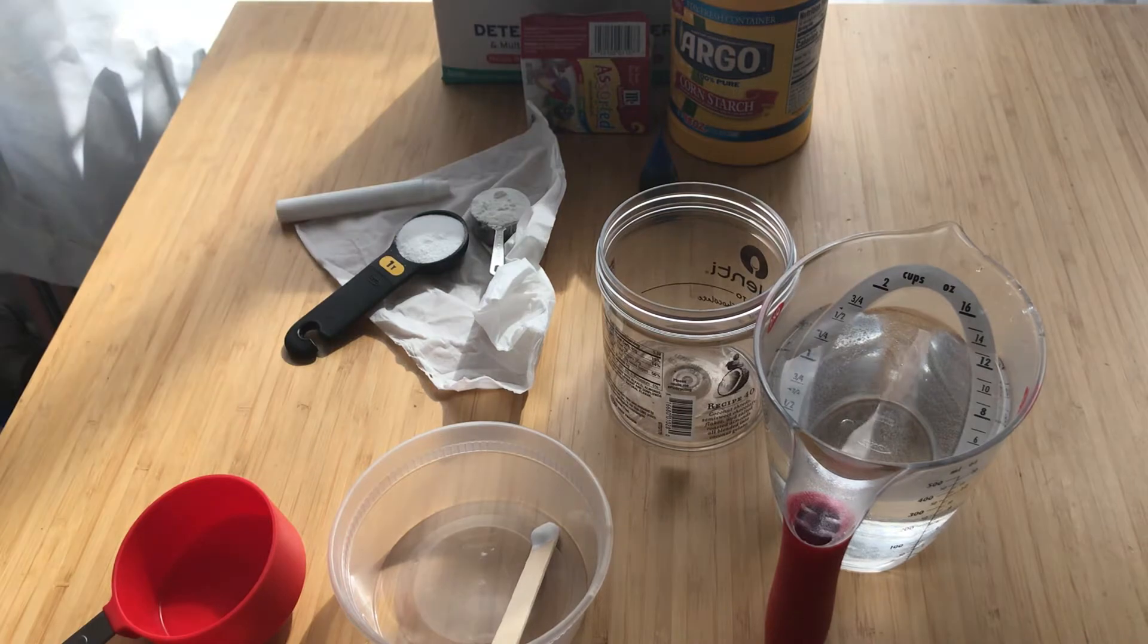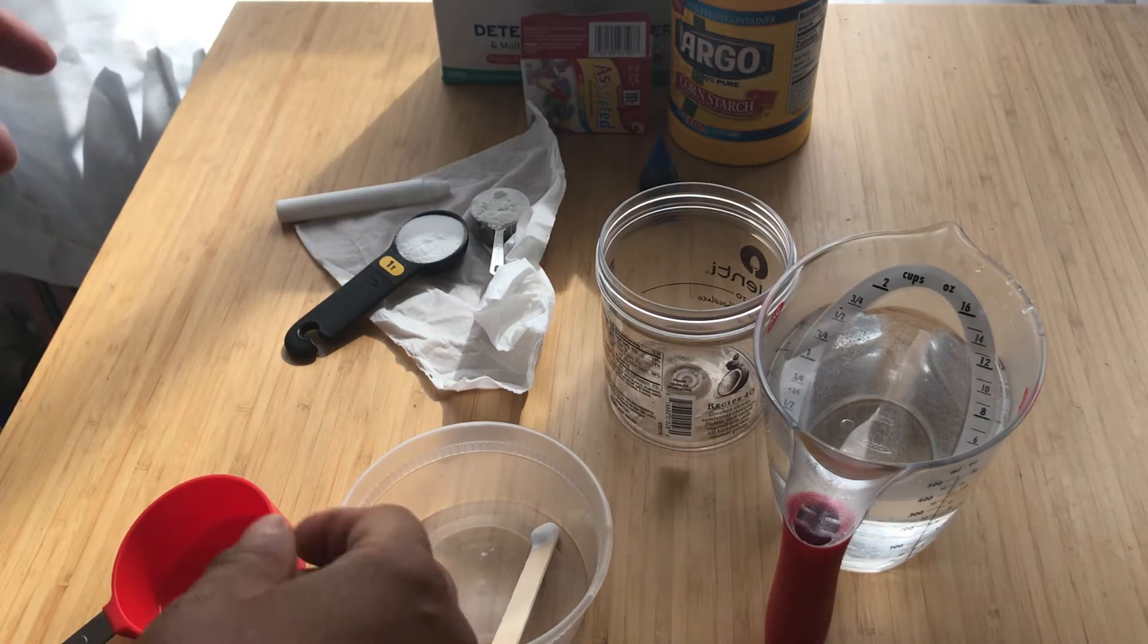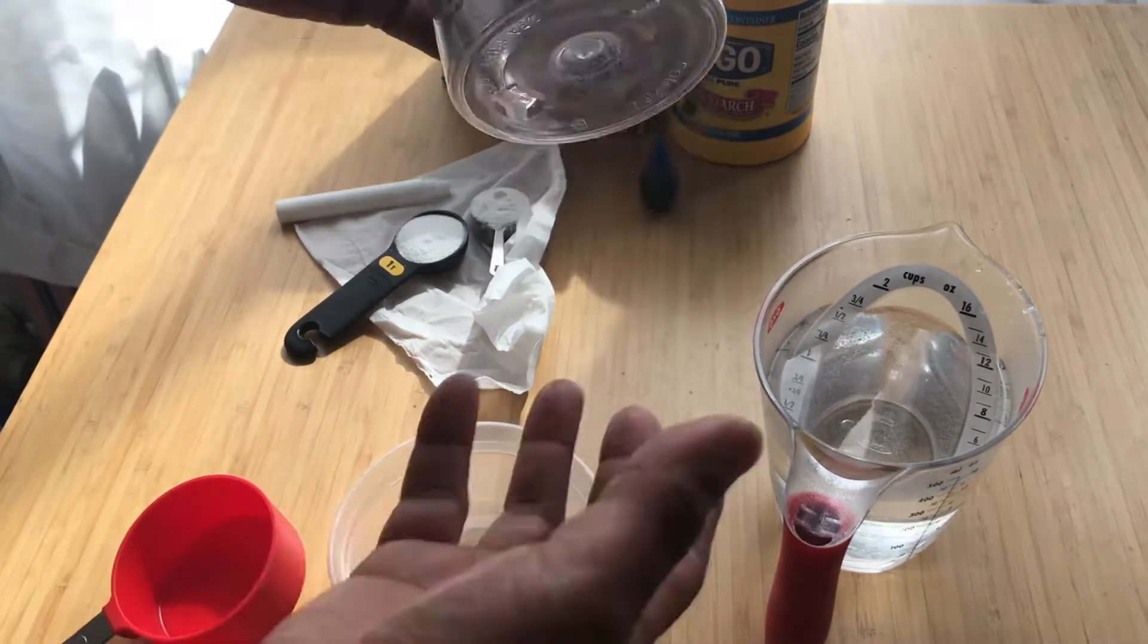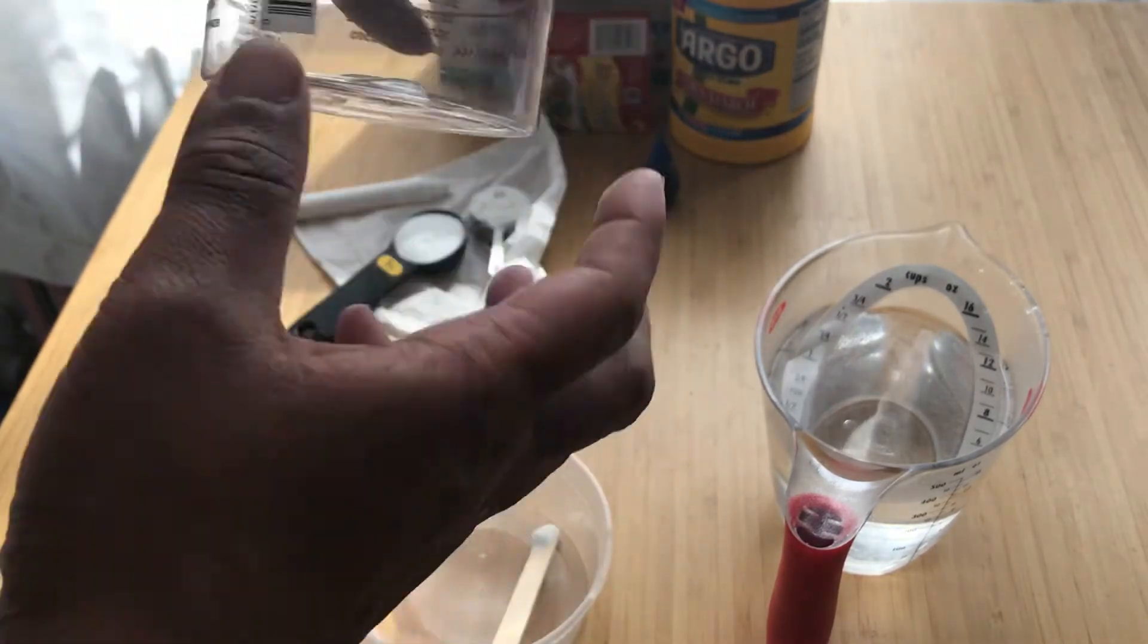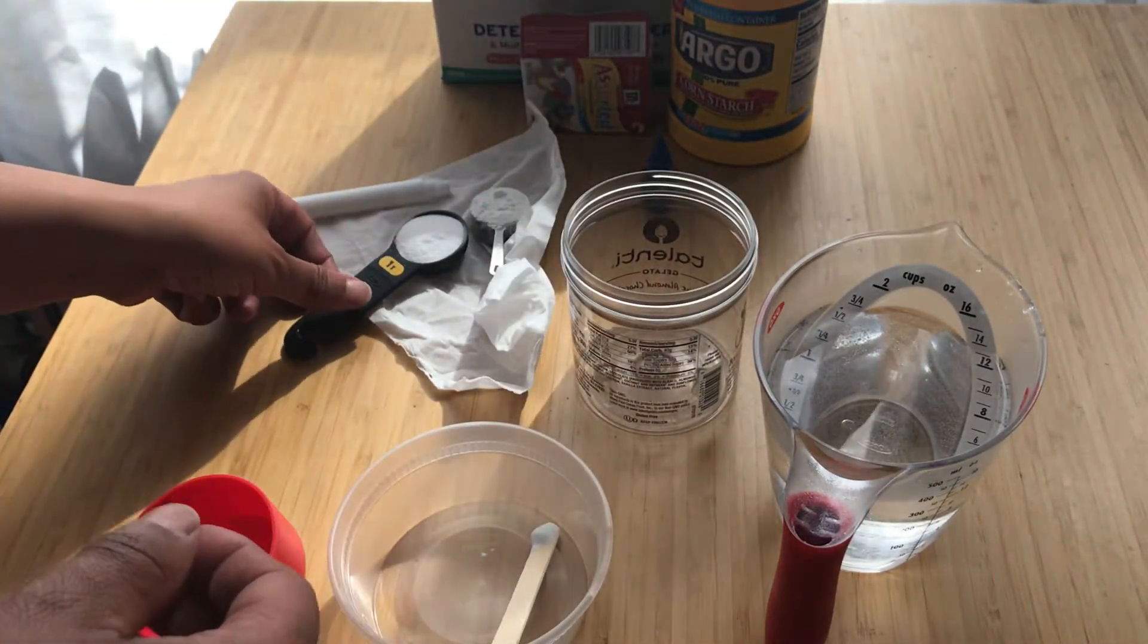So the first thing you do is you get your dry ingredients. So in a little container, I'm going to use this recycled container from ice cream.